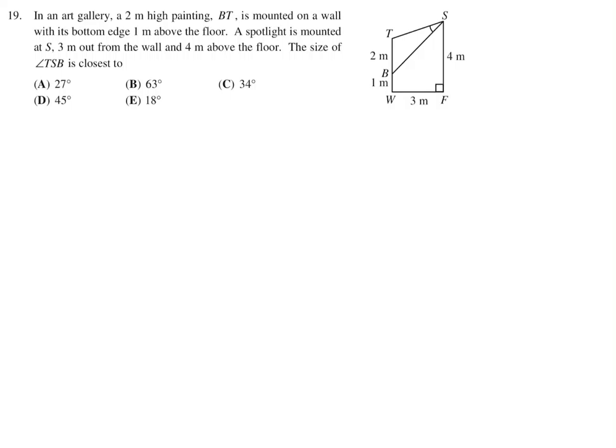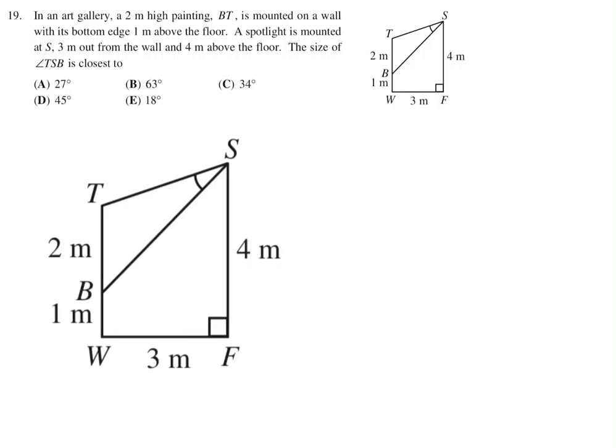In an art gallery, a 2-meter-high painting, BT, is mounted on the wall with its bottom edge 1 meter above the floor. A spotlight is mounted at S, 3 meters out from the wall and 4 meters above the floor. The size of angle TSB is closest to. So first, let's label as much as we can. A lot of this is already labeled. But I think it will be helpful if I draw some lines. I'll draw one line that's basically parallel to the bottom. And what else can I draw? Another line from T parallel like that. And I think that should be it. So let's label this now. Since this is 3, this is 3. And therefore, this is 3. And let's see here. From here to here, it looks like that's 2 plus 1. So that's 3. And therefore, this would be 3. And since the entire distance from S down to F is 4, this little guy in here will be 1. And this is a right angle because of the way I drew it, parallel.